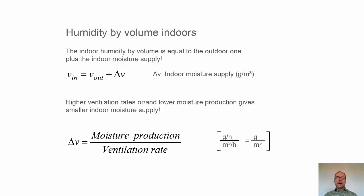If we have a high ventilation rate, the moisture supply will be lower and if the moisture production is lower, we'll also get a lower indoor moisture supply. So by writing it in formula, delta V will be equal to the moisture production divided by the ventilation rate. So for instance, moisture production is grams per hour and ventilation rate is cubic meters per hour. We get delta V equal to the unit grams per cubic meter as we expected.